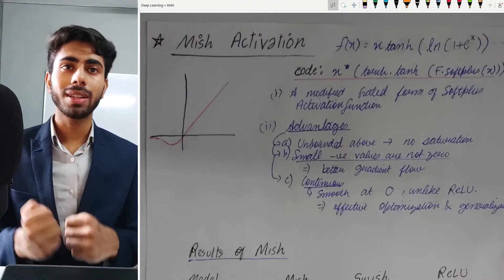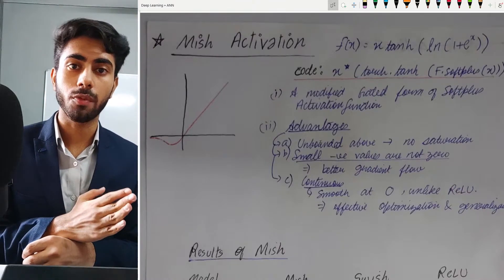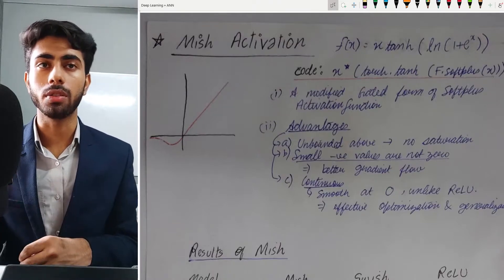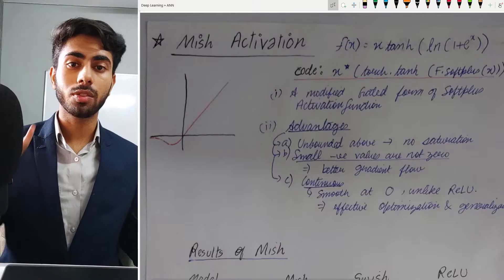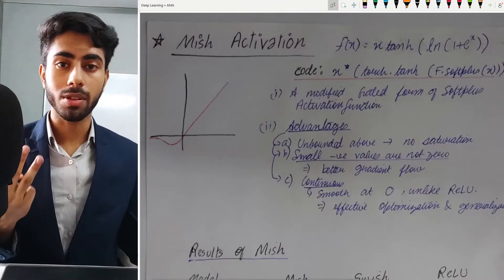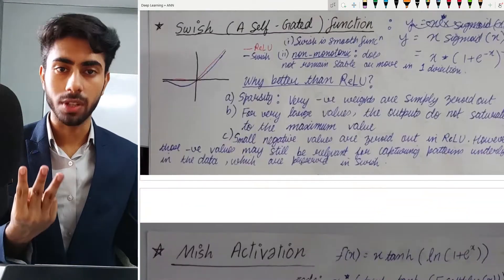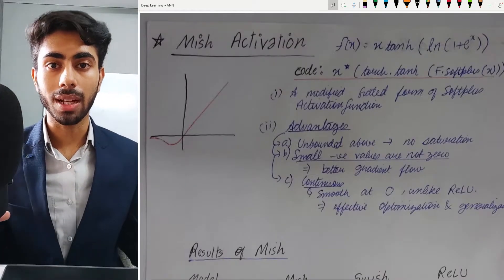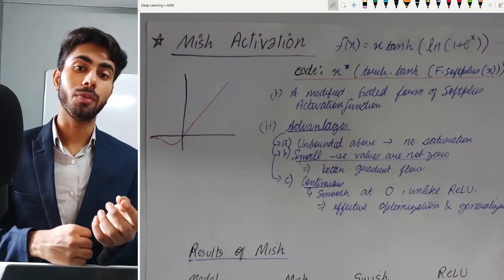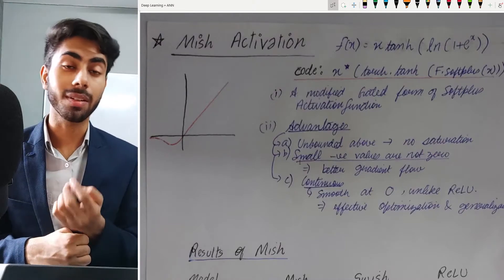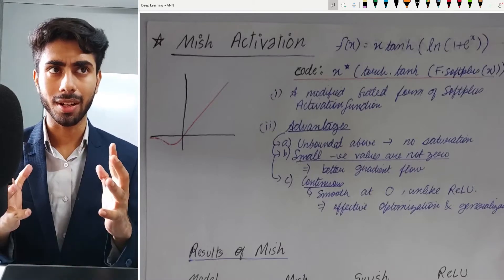After that we discussed a new activation function, GLU or Gated Linear Units. Once we completed GLU and ELU, we discussed three brand new activation functions: softplus, maxout, and swish. Those were all the activation functions covered so far, and in this video we will be covering a very new activation function called mish. So without wasting any time, let's get started.